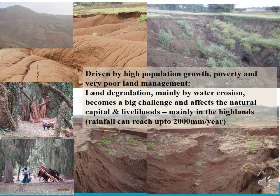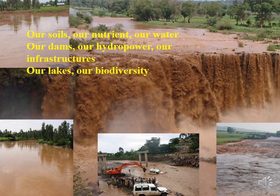Driven by high population growth, poverty, and very poor land management, land degradation mainly by water erosion becomes a big challenge and affects both the natural capital and the livelihoods. All this eroded sediment from the highlands ends up in rivers and streams, as you can see from the color during the rainy season.